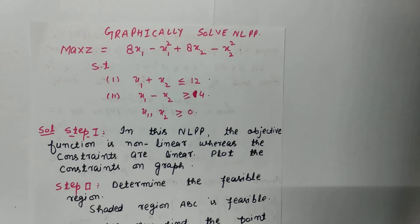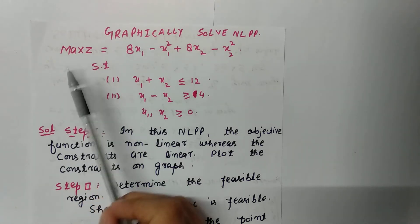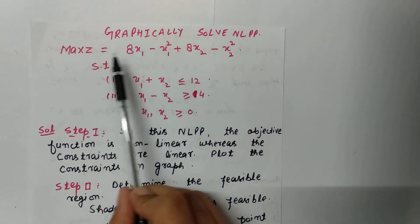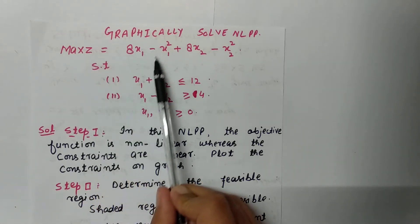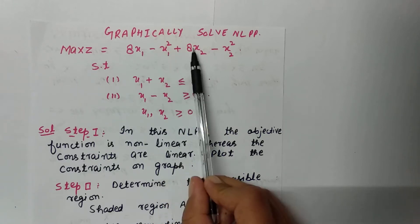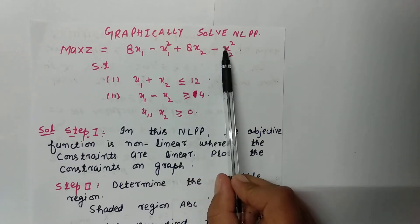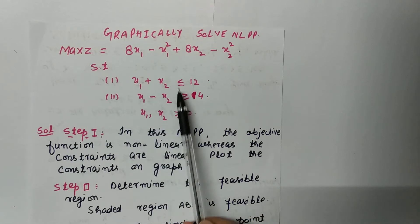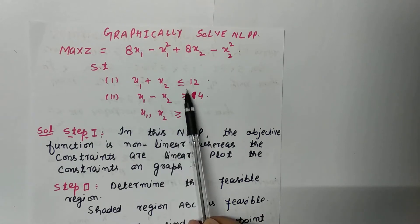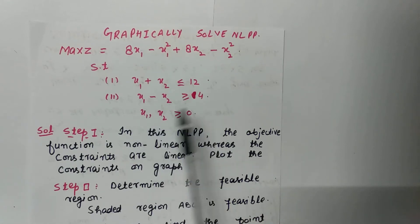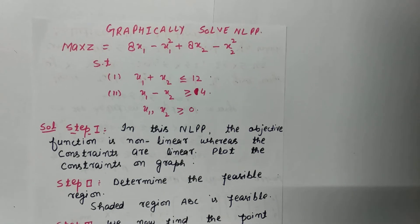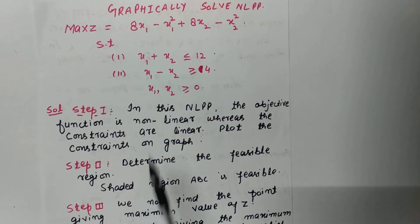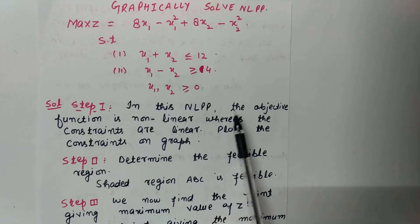So let us start. Here the objective function is: maximize z = 8x1 − x1² + 8x2 − x2², and the constraints are x1 + x2 ≤ 12, x1 − x2 ≥ 4, and x1, x2 ≥ 0.